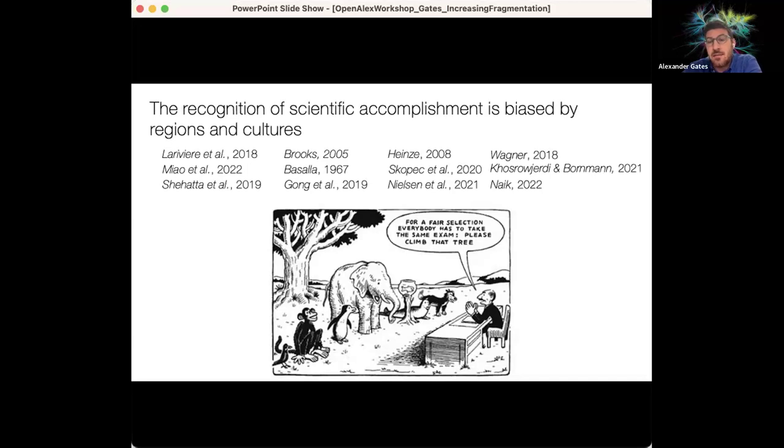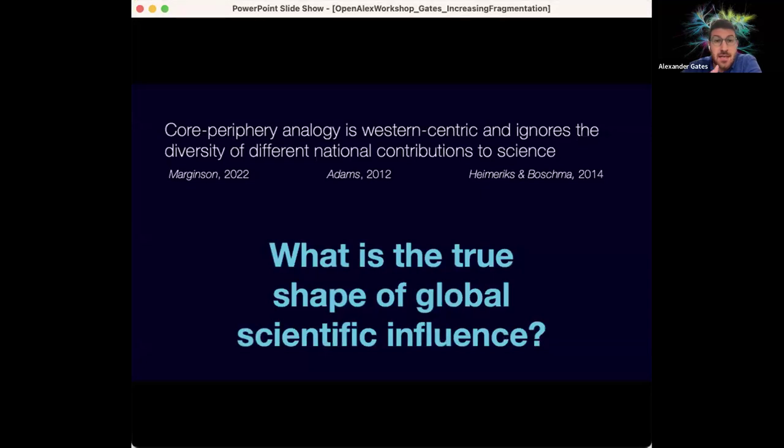And what we also know is that a lot of scientific recognition ecosystems are biased by regions and cultures. And so this has an influence on what science is allowed to be published, where it's allowed to be published, and how it's recognized within the scientific ecosystem. This has led a lot of people to say that the core periphery analogy is just a Western-centric view of science, and it ignores the diversity of different national contributions to science coming out of the global scientific infrastructure. So that starts us off on our journey. What is the true shape of global science influence and how can we measure that?